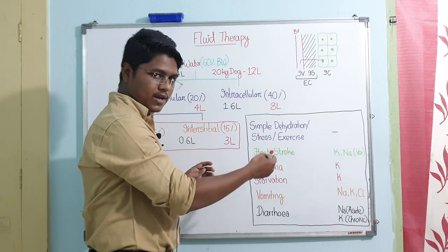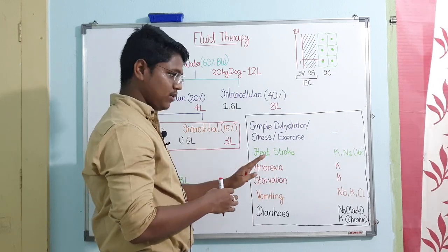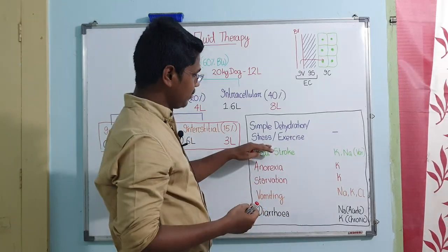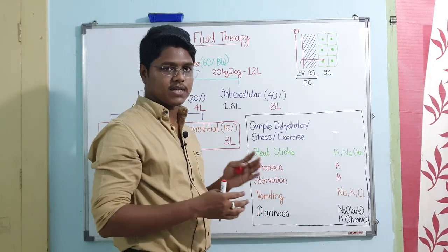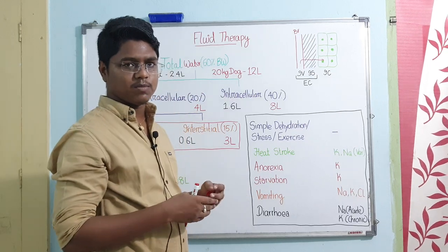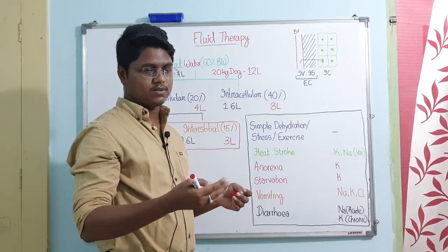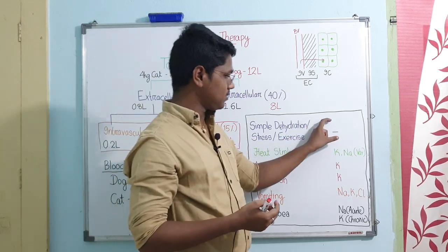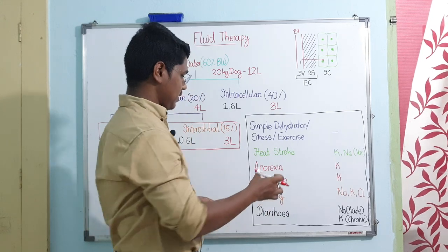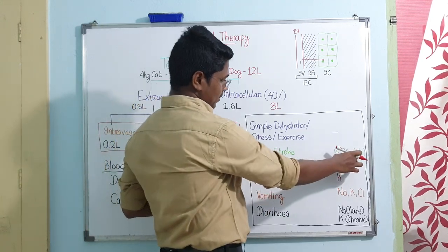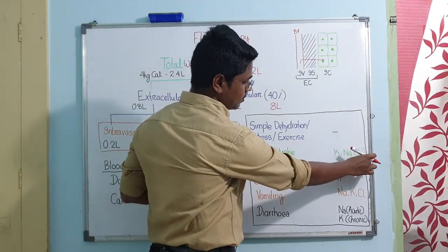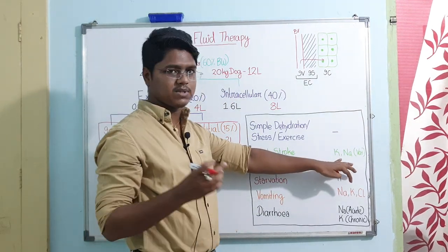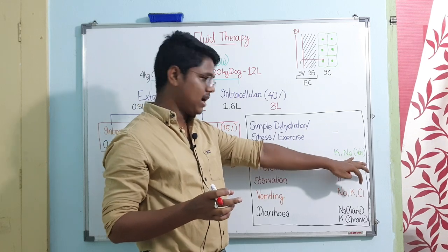Remember these values, and now in your brain, calculate which fluids should be given. Simple dehydration from stress or exercise - there will be dehydration but not much ion loss. But in heat stroke, sodium and potassium loss is variable - sometimes there won't be any loss, sometimes there will be mild loss of potassium and sodium.